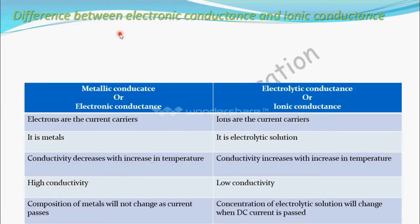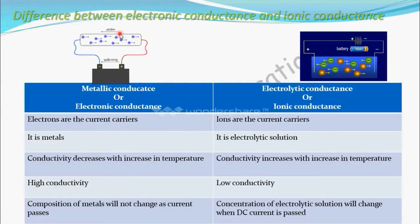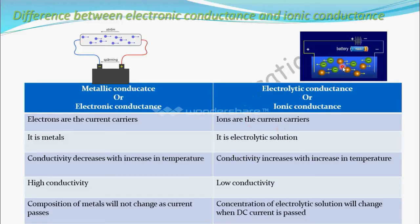Let's see the difference between electronic conductance and ionic conductance. This column is metallic conductance or electronic conductance; this column is electrolytic conductance or ionic conductance. In metallic conductance, electrons are the carriers — that is why it is called electronic conductance. In ionic conductance, ions are the current carriers, so ions move through the circuit.